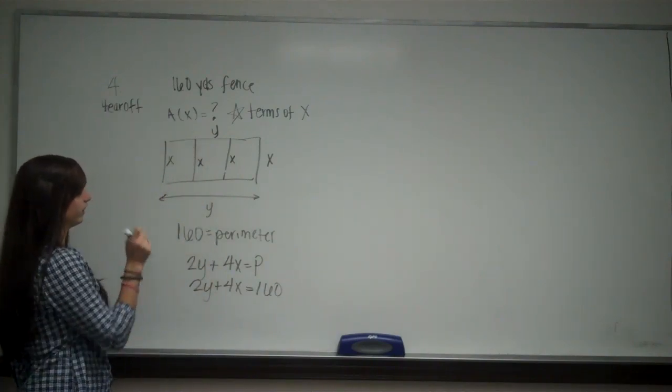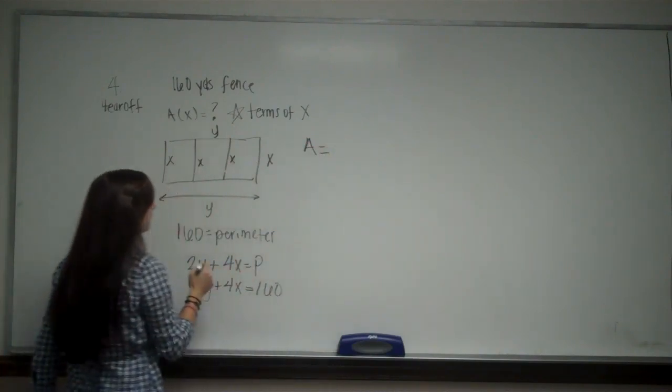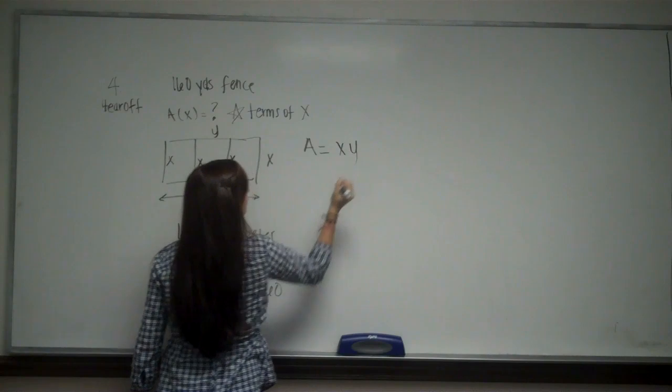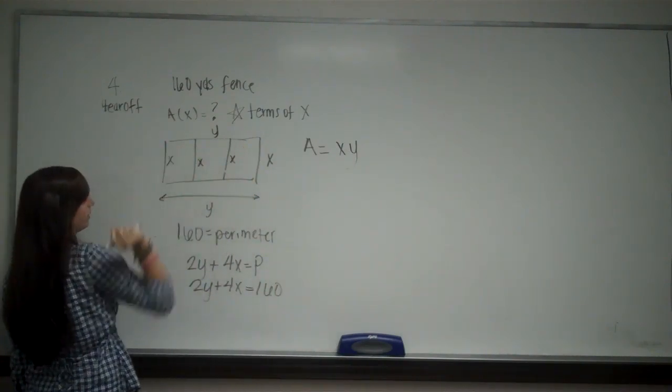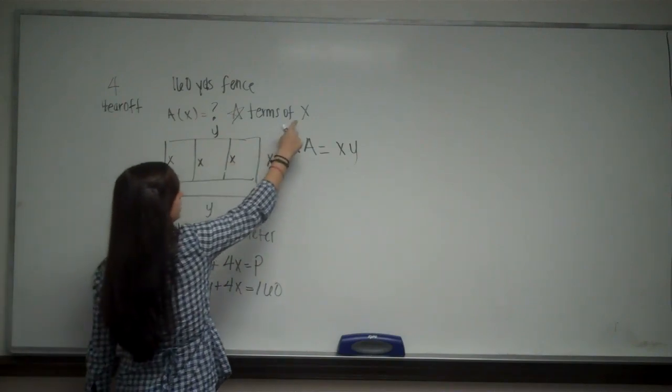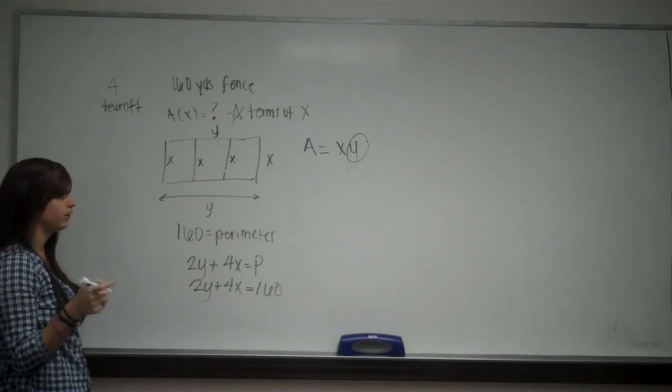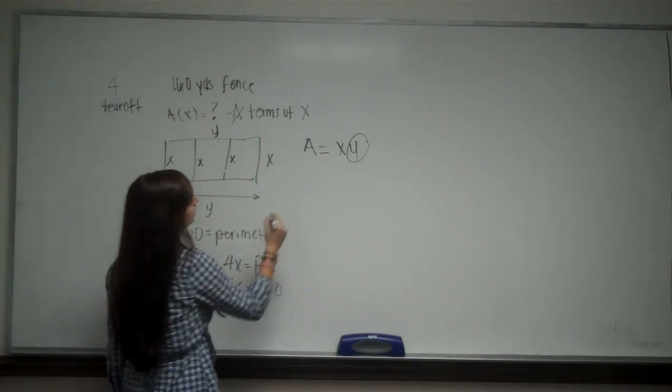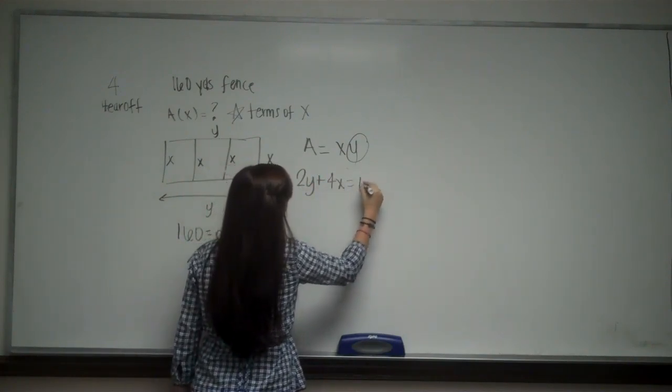But they wanted an equation for area. So our area is just going to be x times y, because area we multiply length times width. And we don't have to multiply by the inside here. But they want it in terms of x, which means this needs to go. So in order to solve for y, I'm going to use my perimeter equation.